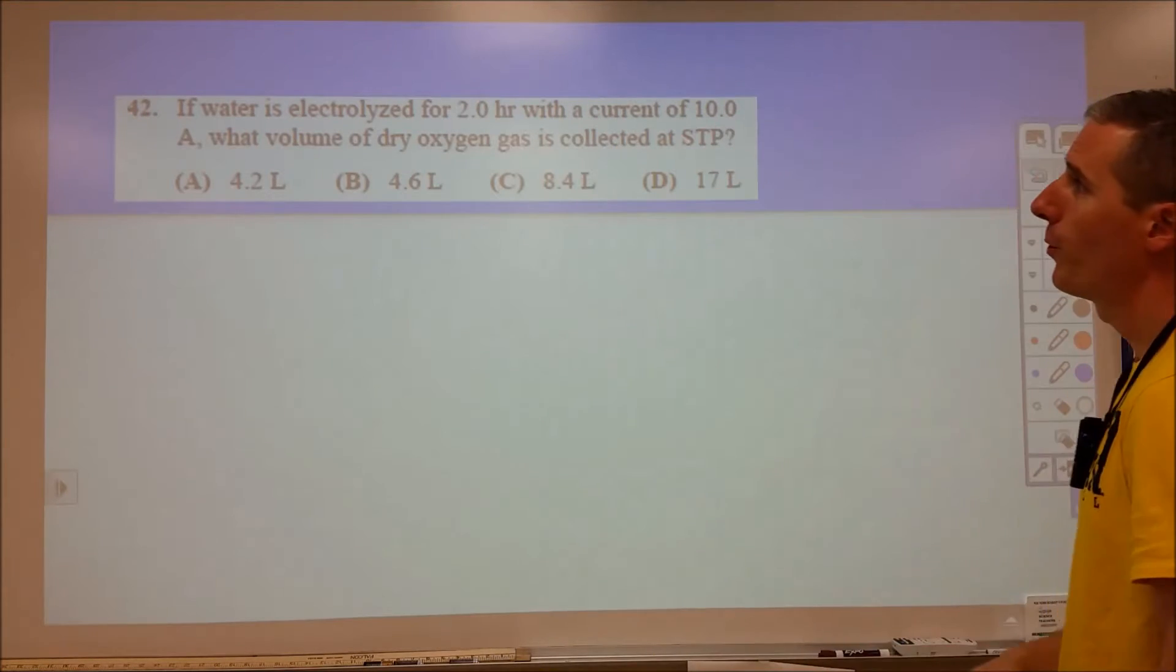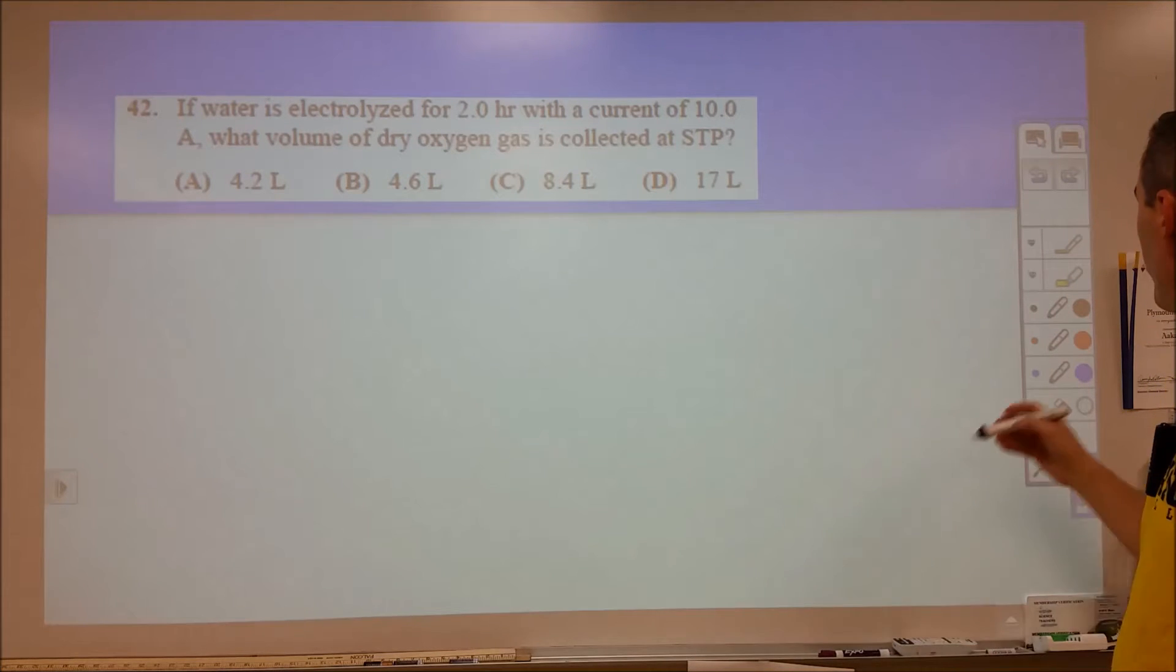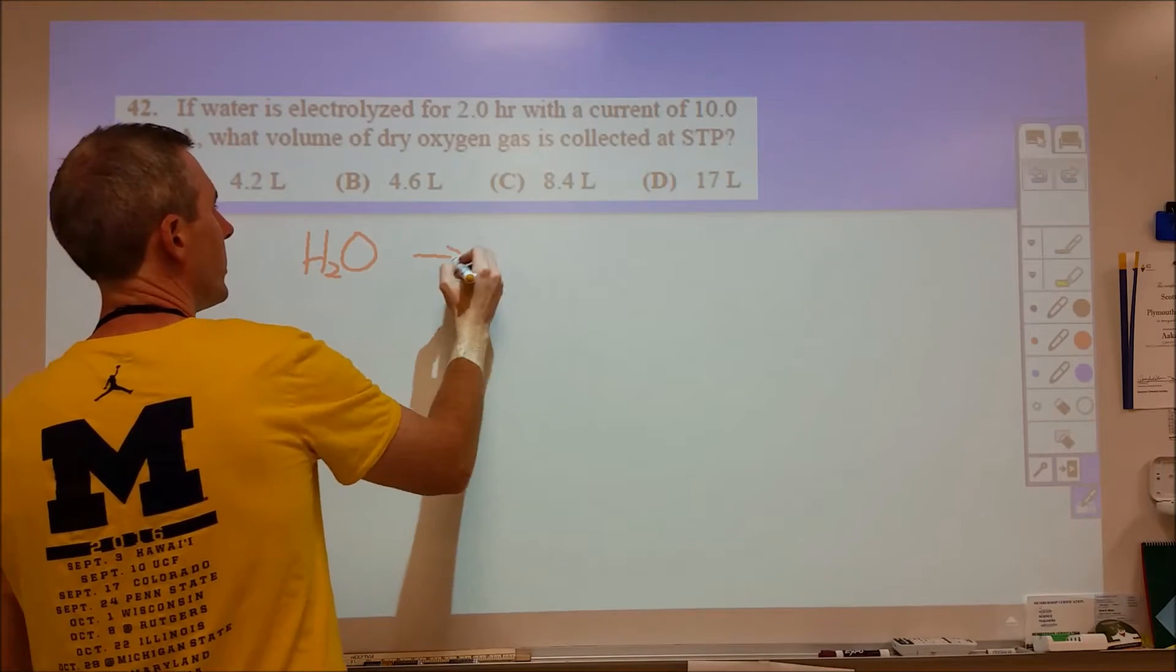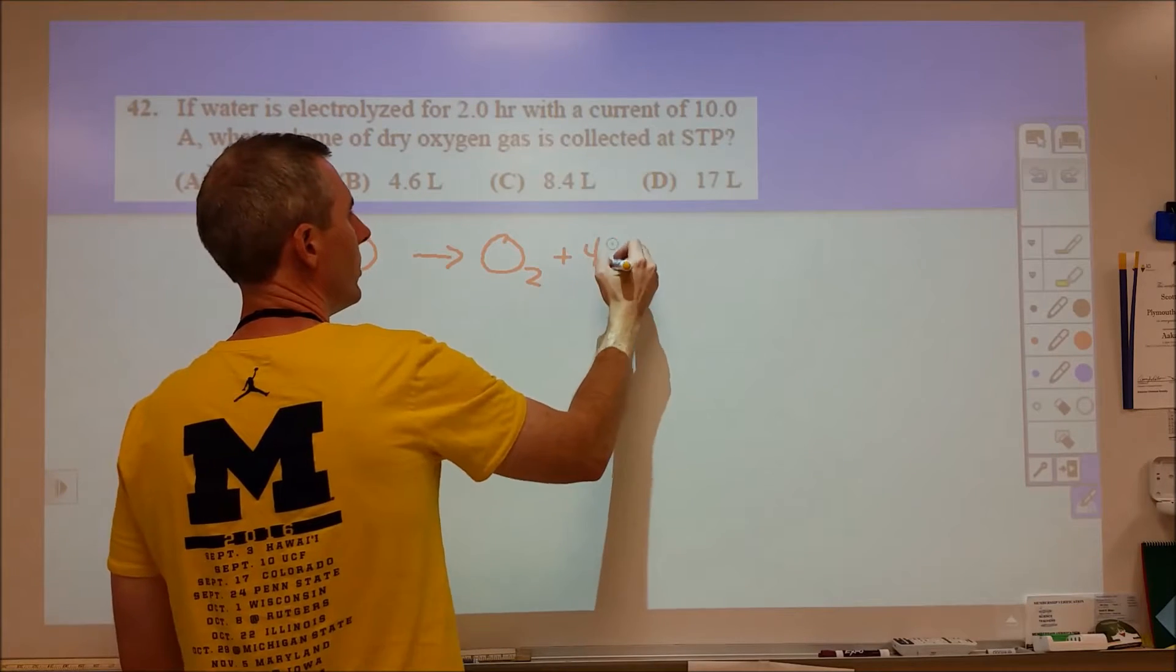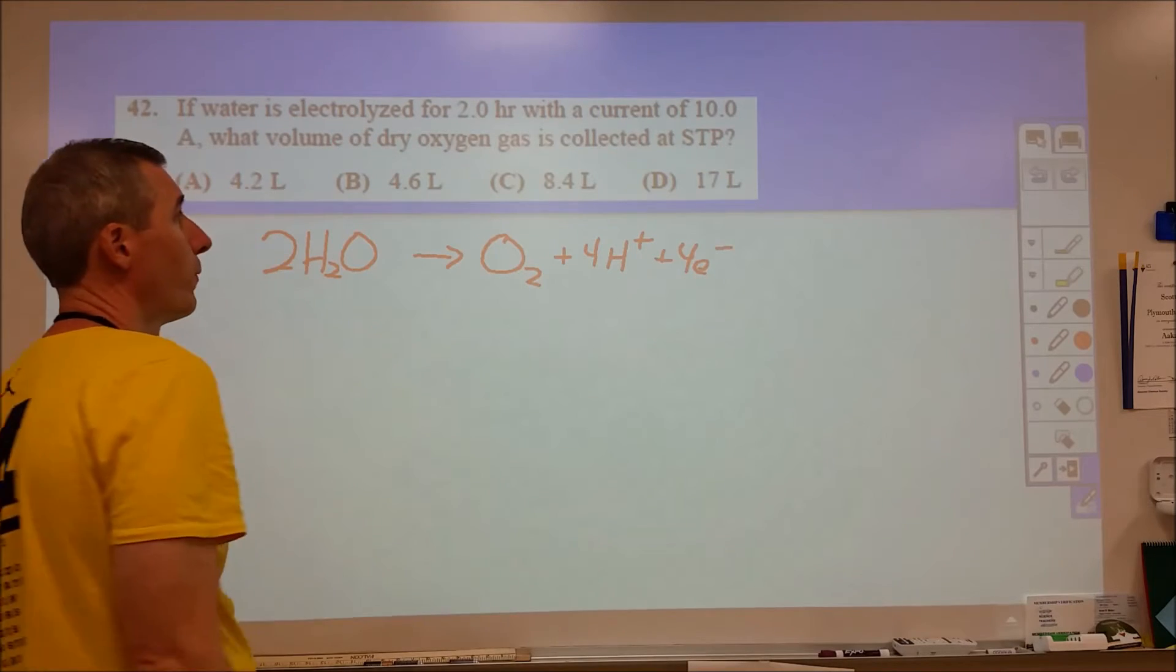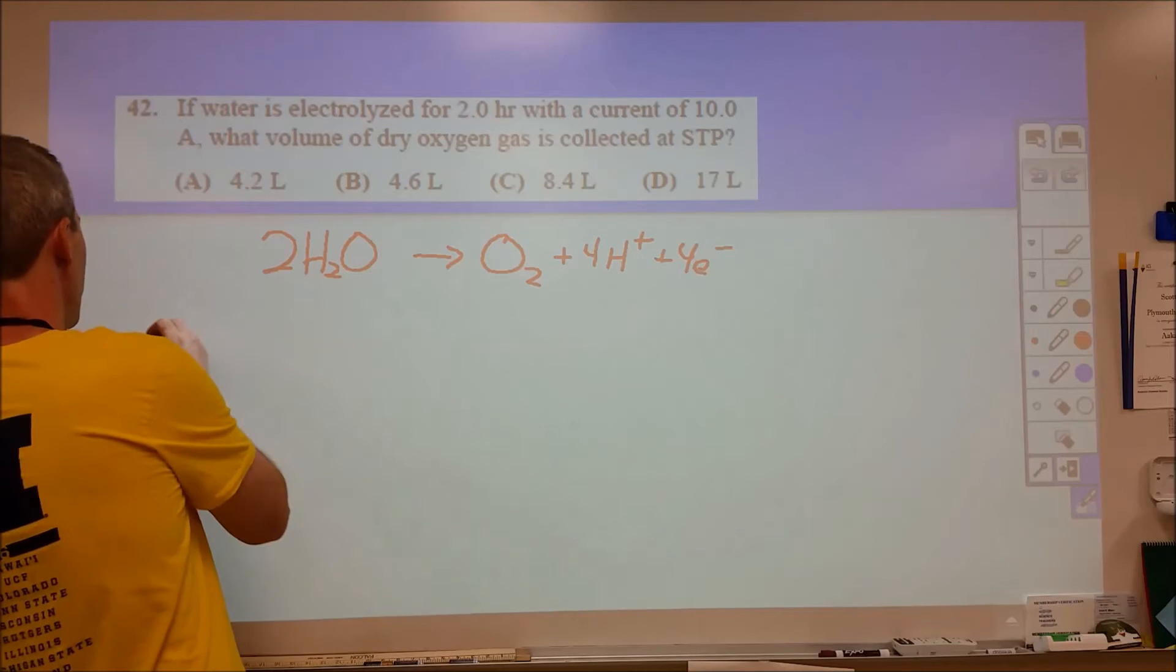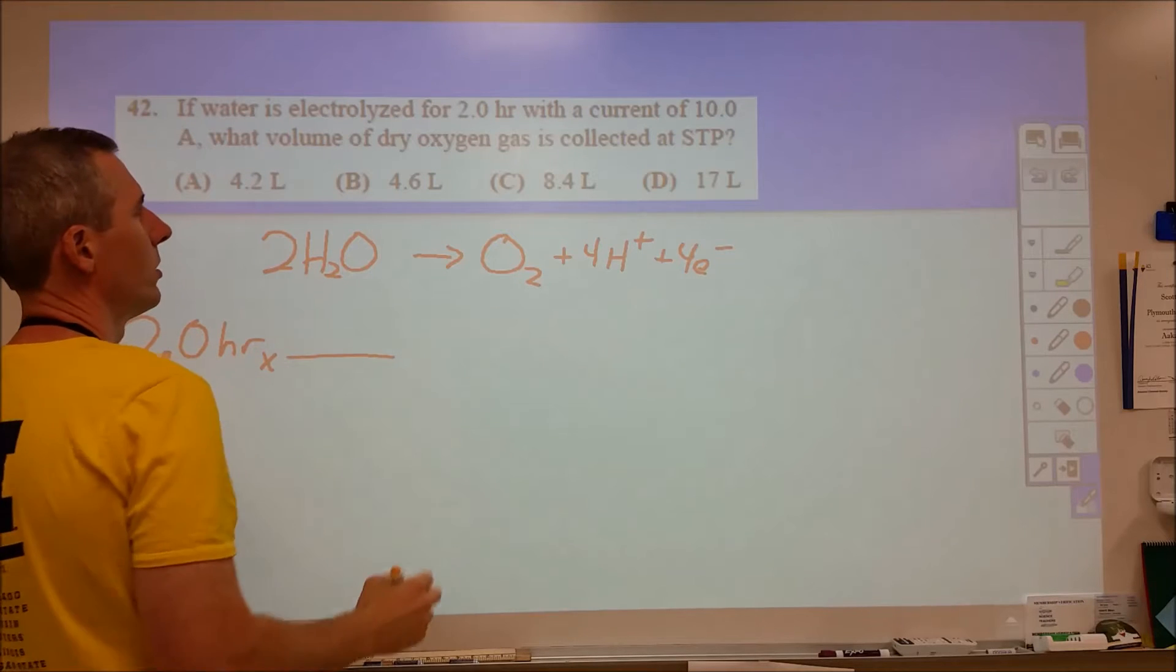Question 42, we're looking at water electrolysis. It's basically a coulometry problem. We need to know the reaction. We're looking at water being turned into oxygen gas, so we need 2 water molecules, 4 H pluses, and 4 electrons. We need to know that number 4 to do the problem. I recommend if you're given a time, start with the time. We're going to start with 2.0 hours and set up an incredibly long dimensional analysis.